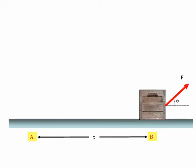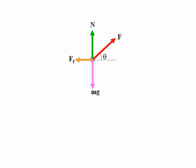So we need to draw a free body diagram. So here's the free body diagram, where we have the pulling force F, the frictional force F subscript F, the weight of the block MG, and the normal reaction force N.